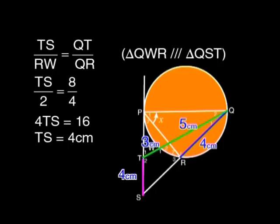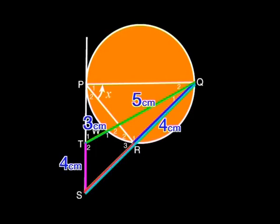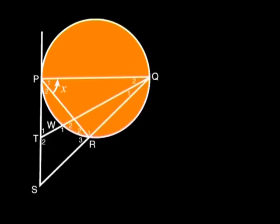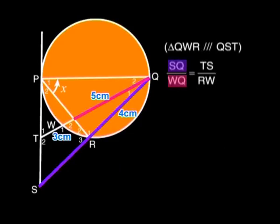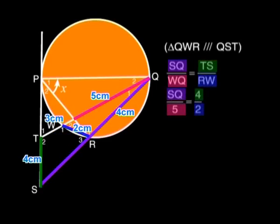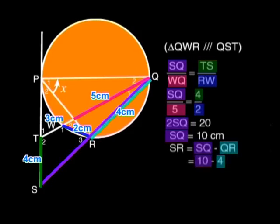How can you find SR? Can you use anything from the triangles? SR is a piece of SQ. Yes. If we subtract RQ from SQ, that will give us SR. Using similar triangles again, we want to find SQ. We can say that SQ divided by WQ equals TS divided by RW. That gives us SQ divided by 5 equal to 4 divided by 2. Multiply this out and SQ equals 10 centimeters. If SQ is 10 and QR is 4, then SR is 6 centimeters.